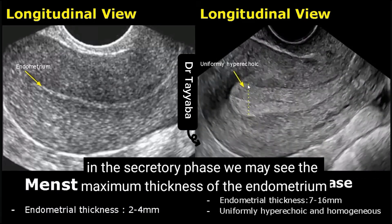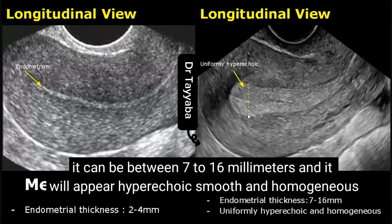In the secretory phase, we may see the maximum thickness of the endometrium. It can be between 7–16 mm and it appears hyperechoic, smooth, and homogeneous.